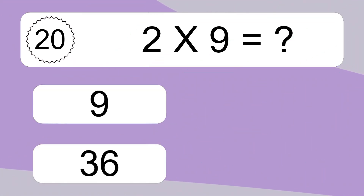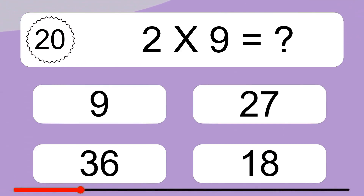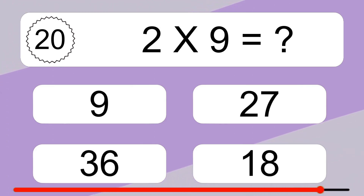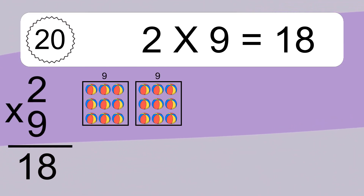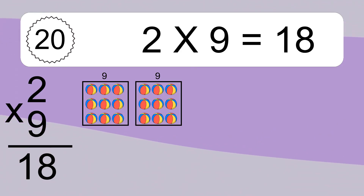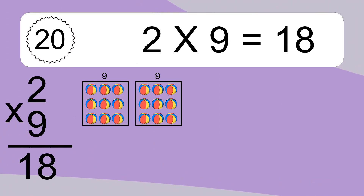2 times 9 equals what? 2 times 9 equals 18. We have 2 boxes and each box has 9 colorful balls inside. If you count all the balls in all the boxes together, you will have 2 times 9 balls. This equals 18 balls.